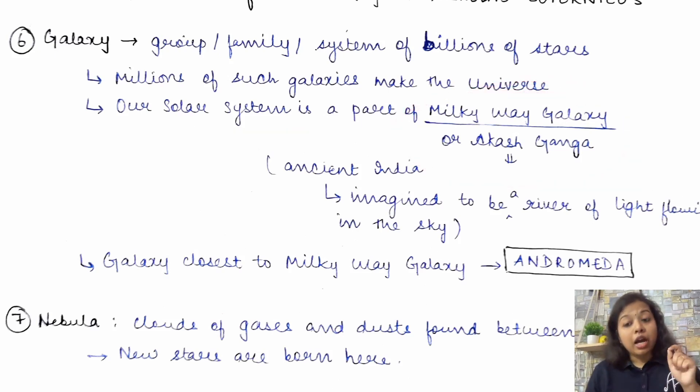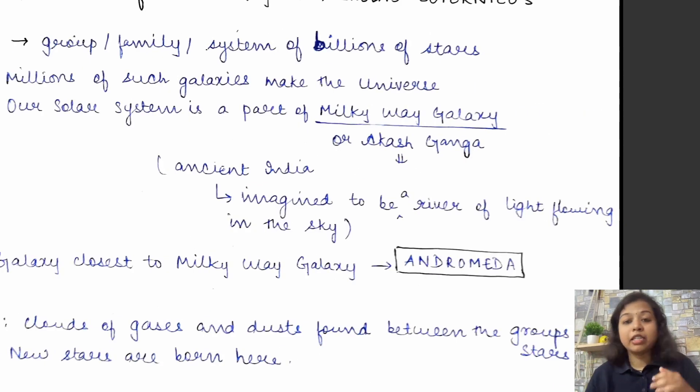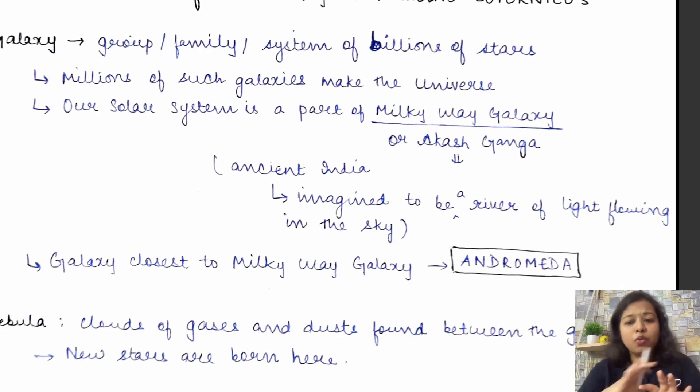So, our solar system is a part of the Milky Way galaxy. Jisko, other name also is given. That is Akash Ganga. Why? Because in the ancient India, this Milky Way galaxy was imagined to be a river of light that is flowing in the sky. Bilkul white band type. You know, you would see something like whitish band and it would be like ki ek river hai wo flow kar raha hai sky mein. And the river is of light. Kyun ki, khub white sa dikh raha hai. That is why it is ko Milky Way galaxy ya Akash Ganga. Akash mein Ganga behati hui. Matlab, you know, river behata hua hai. Aisa type ka dikhta tha and Milky Way because of the color.